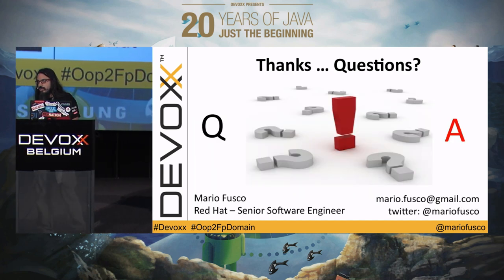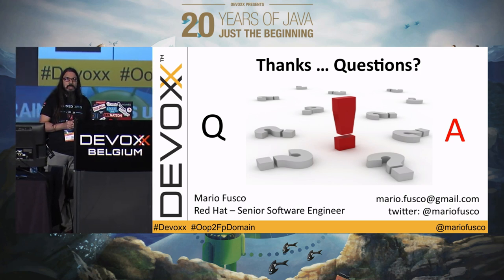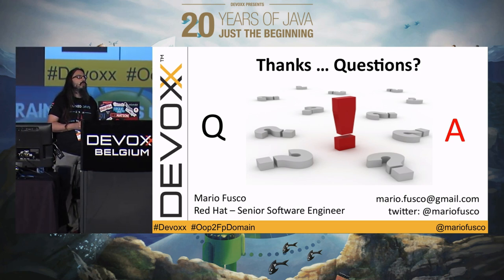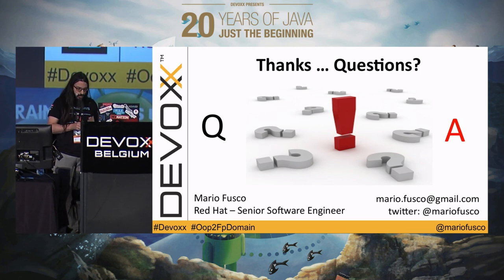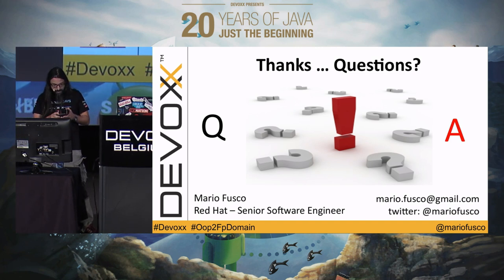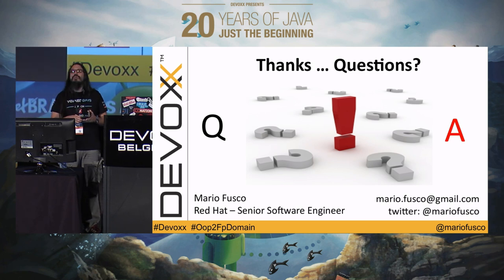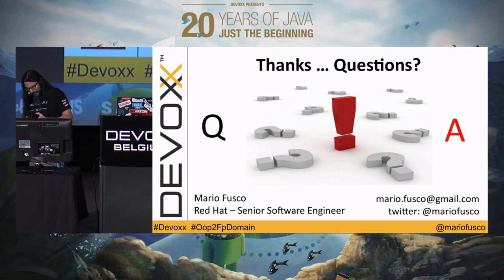Throw away the old object-centric mindset and learn some functional patterns — don't fear monads. These are a few suggested readings: a book I wrote with a couple of friends about Java 8, and if you want to buy only one of the three, I suggest the third one — it's amazing and about real functional domain modeling. I have five minutes for questions.